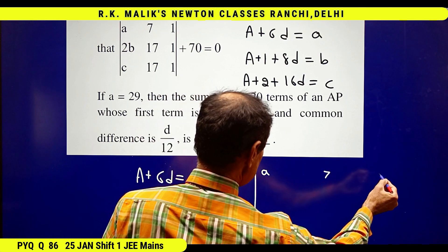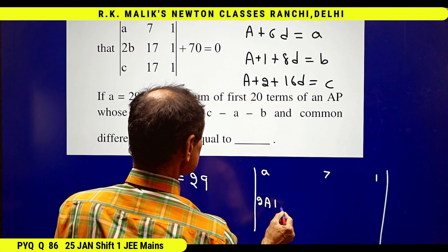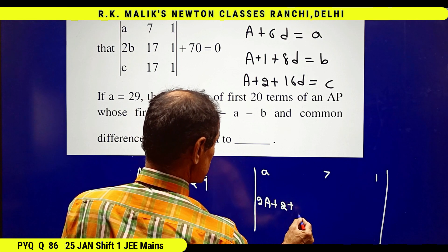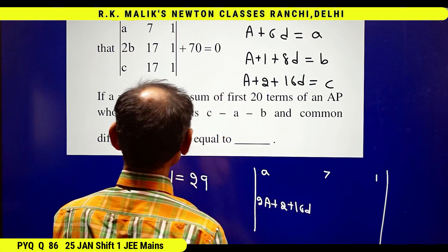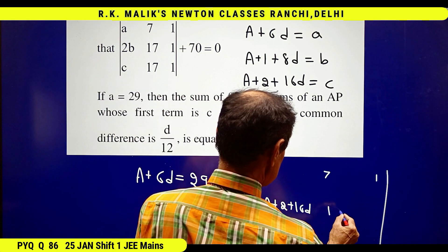The determinant is: a, 7, 1; 2b, 17, 1; c, 17, 1.